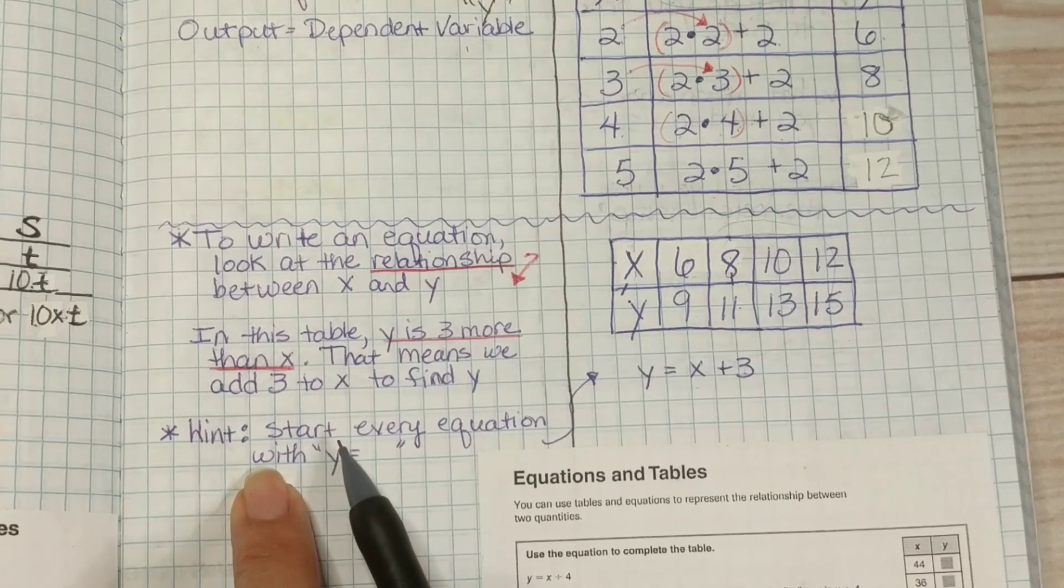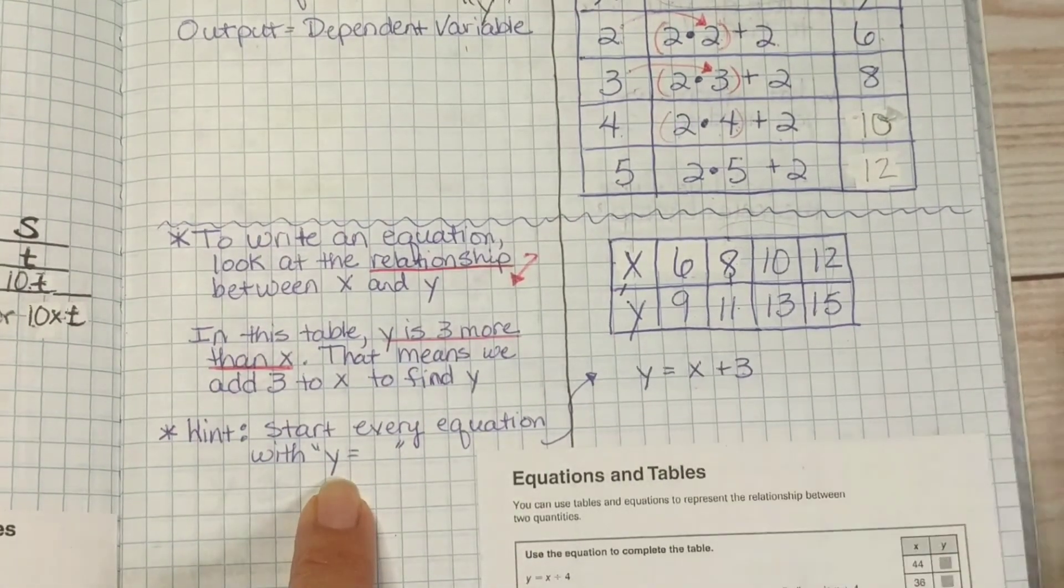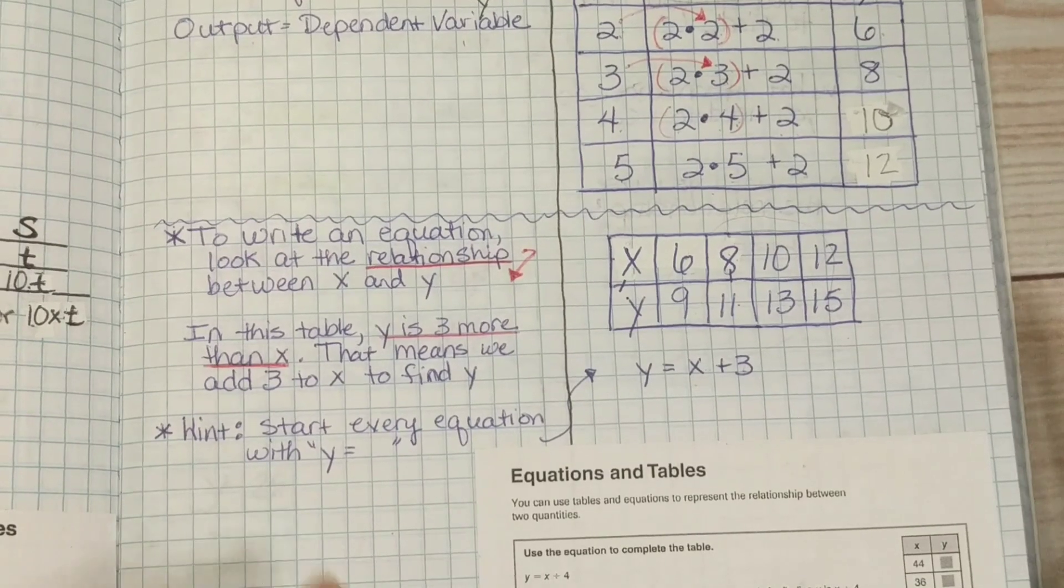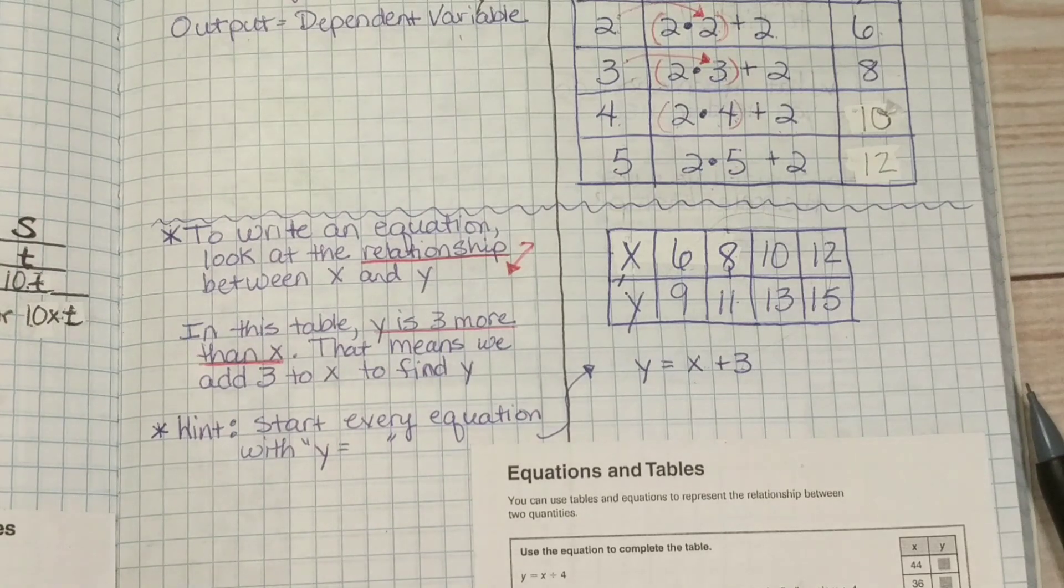And here's a big hint. Start every equation with Y equals. So, Y equals X plus 3 in this case. All right. You should be able to find the notes. You can either pause this or find the PDF in the Google Classroom.